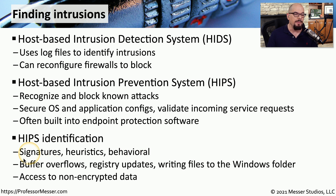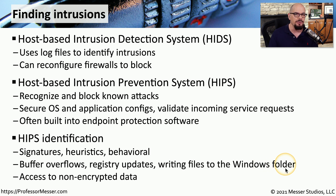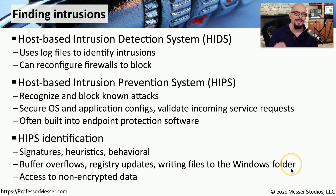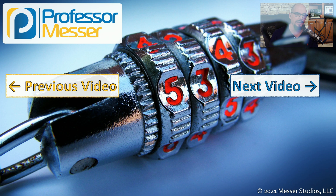For example, buffer overflows have a known signature that can be identified by the intrusion prevention system. A large number of sudden registry updates would fire the heuristics engine inside the HIPS. And writing files directly to the Windows folder is behavior you would not expect to see — the behavioral aspect of the software would identify something malicious whenever anything is written into that folder. Since this is running on our endpoints, it has full access to all data on the system, even data in the clear that is being processed in memory.